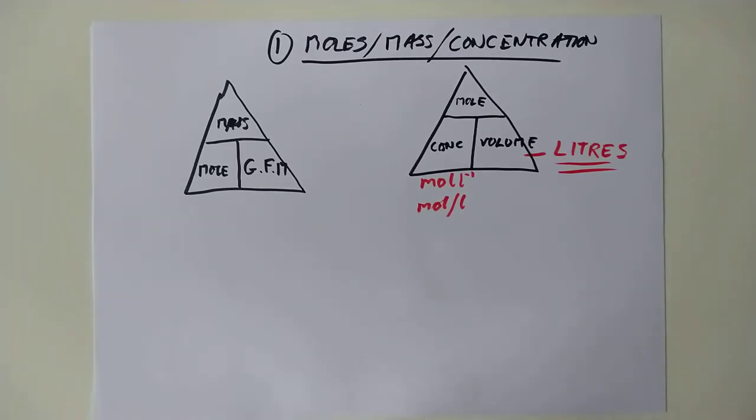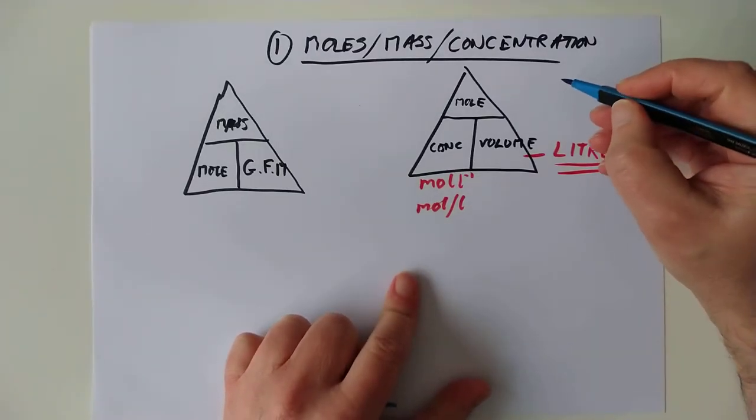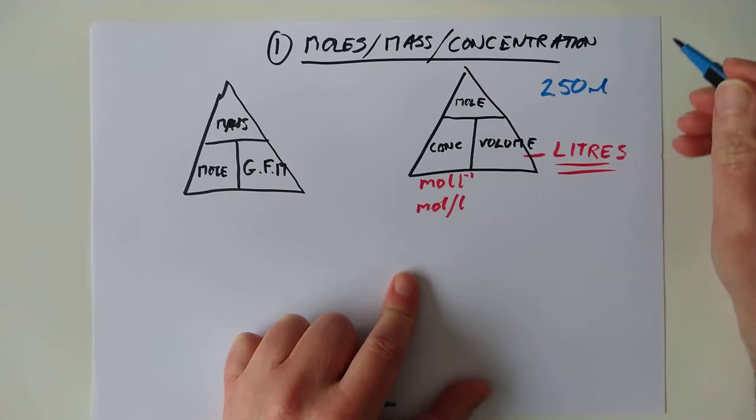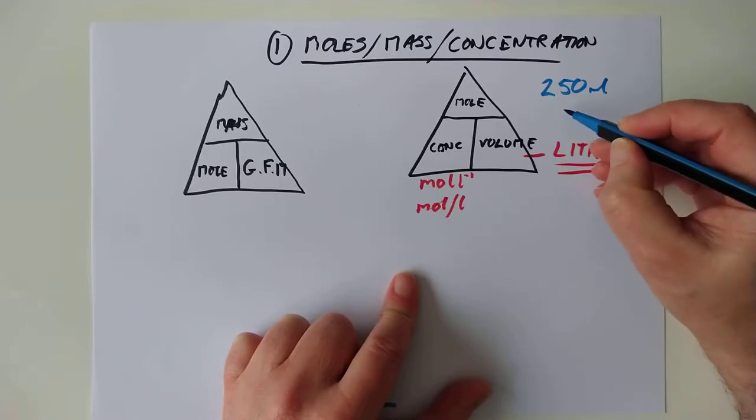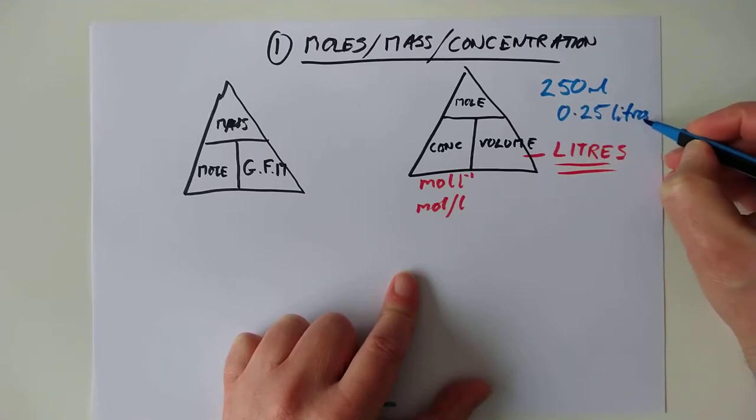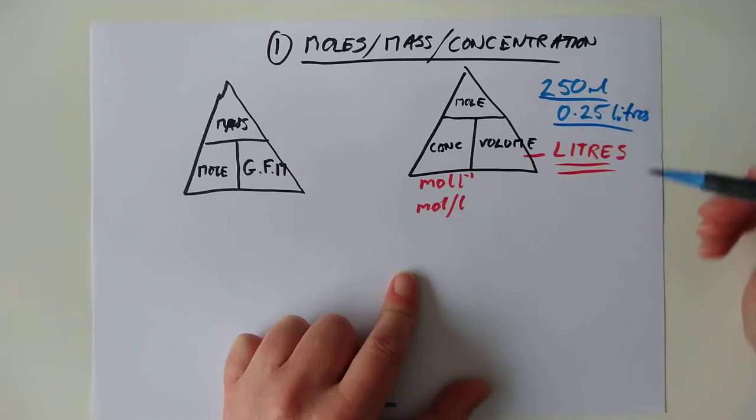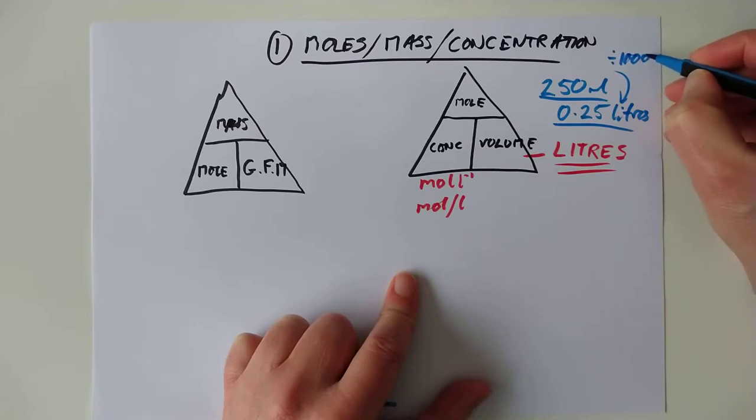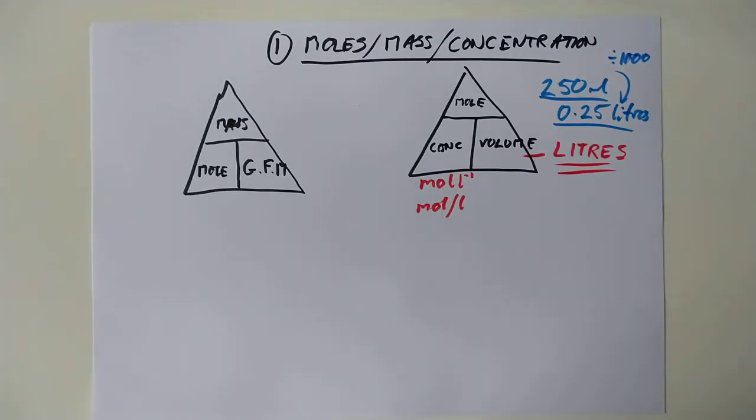By the way, just a brief foray. If you're not sure how to turn millilitres into litres, you divide by 1000. So if you had 250 millilitres, for example, divide that by 1000. Move the decimal point three places, and you end up with 0.25 litres. Divide by 1000 to change millilitres into litres.